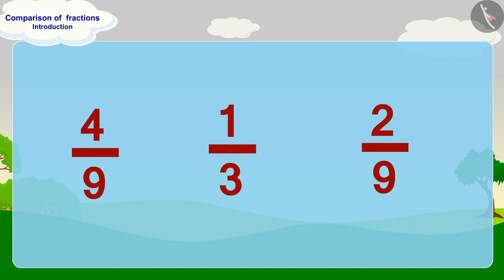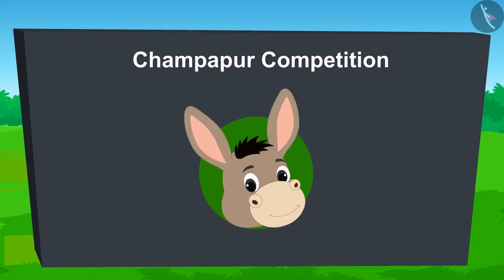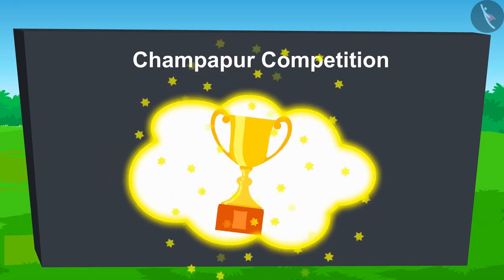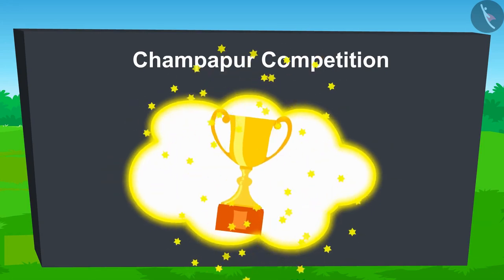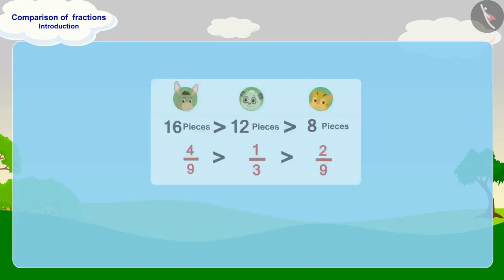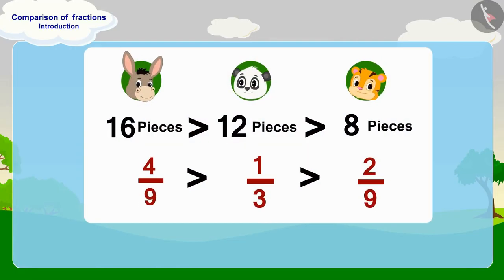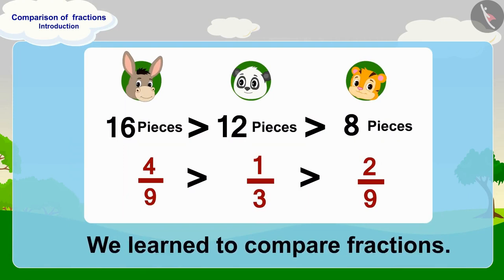We can also write the fractions for the number of pieces written on by Bholla, Shere Khan, and Golu. After all, Bholla won the competition by writing his name on the most pieces of paper. Children, in this lesson we learned to compare fractions.